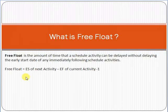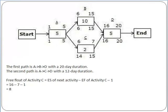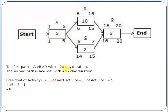The formula for free float is: ES (Early Start) of the next activity, minus EF (Early Finish) of the current activity, minus 1. Looking at this network diagram, there are two paths: path A-B-D with a total duration of 20 days, and path A-C-D with a total duration of 12 days. Since A-B-D is the longest duration, it is the critical path.